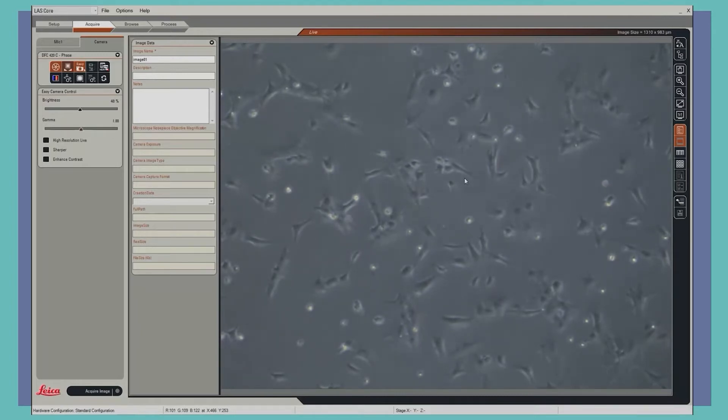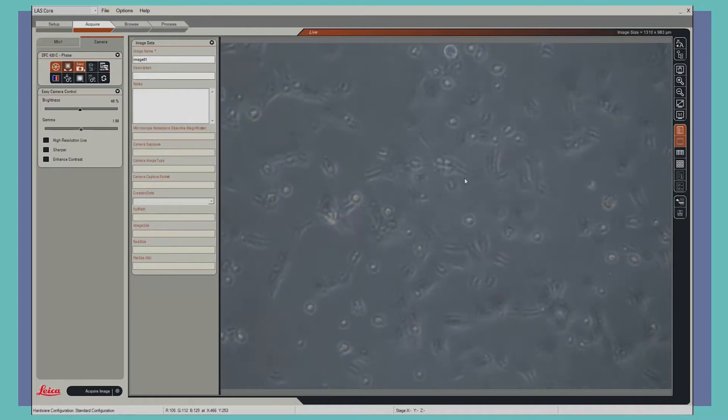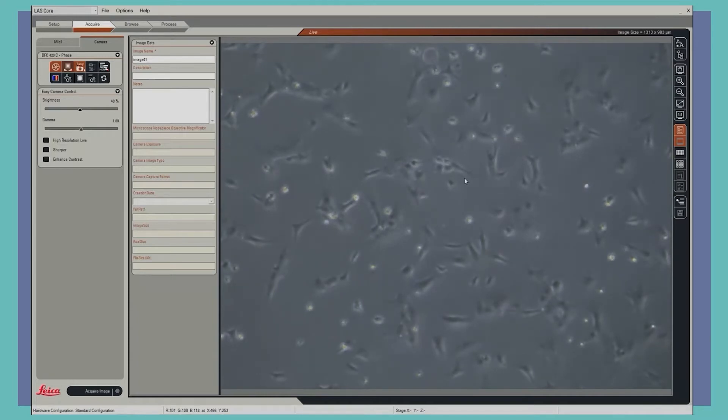First we want to acquire the sharpest image possible of our cells. We do this by adjusting the coarse focus knob on the microscope itself. As we bring the cells out of focus, we can see the image becomes blurry, and we can quickly bring it back into focus, acquiring a much sharper image of our cells.